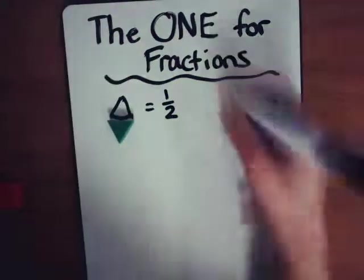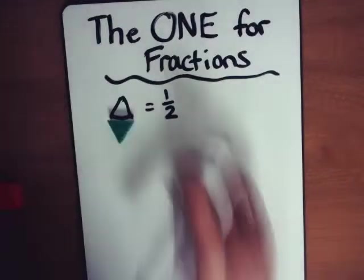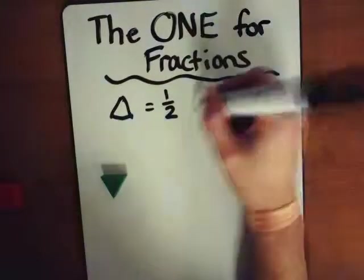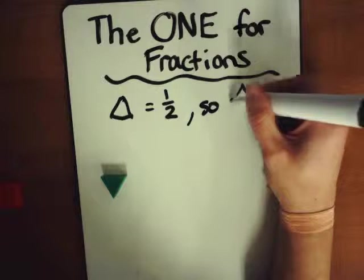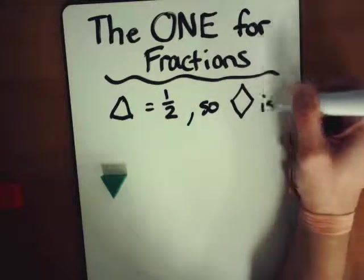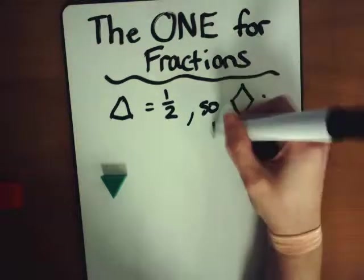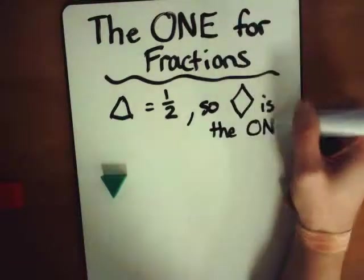That's right. One half is that triangle. So the rhombus is the ONE, the whole.